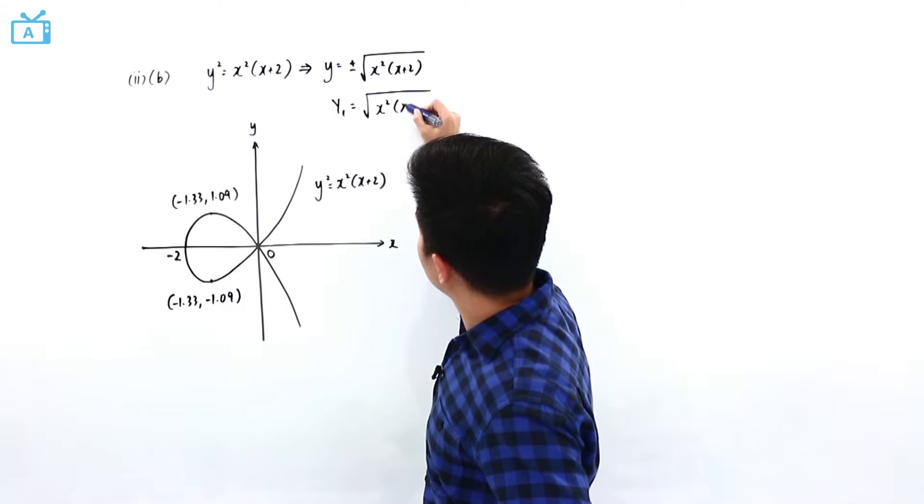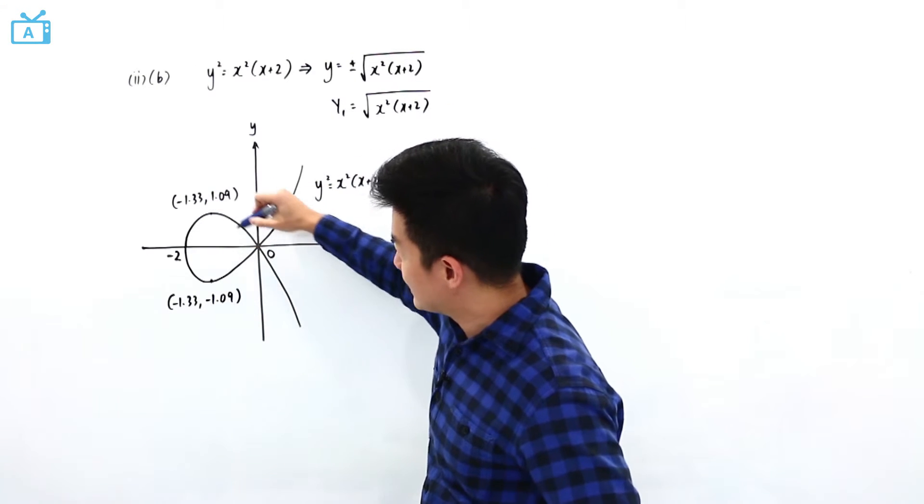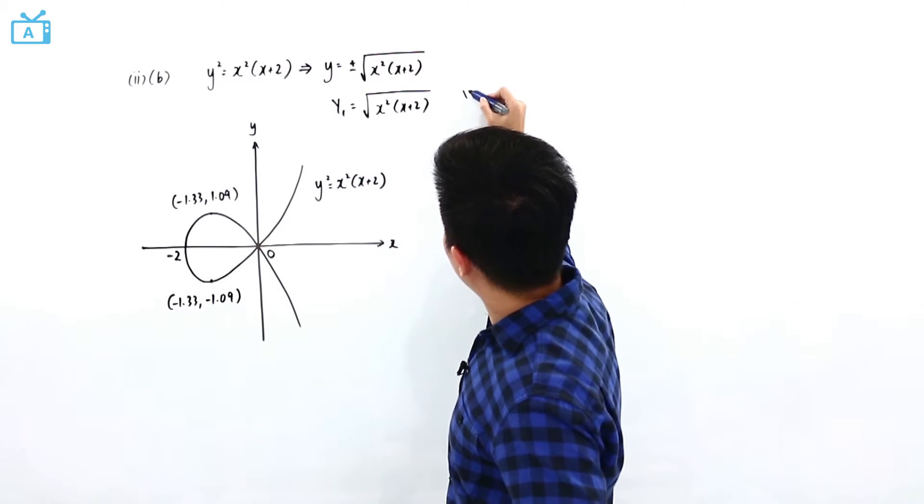So positive of x squared, x plus 2, which is actually this portion of the graph. And for y2,